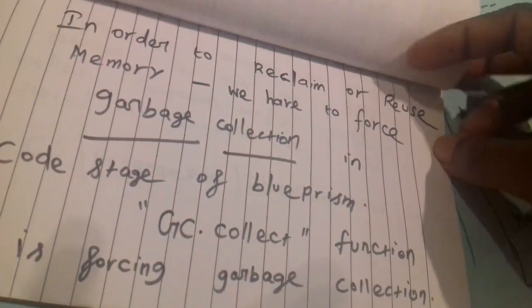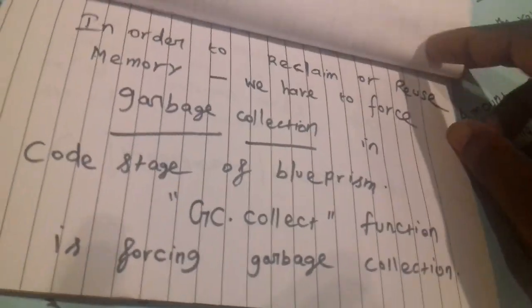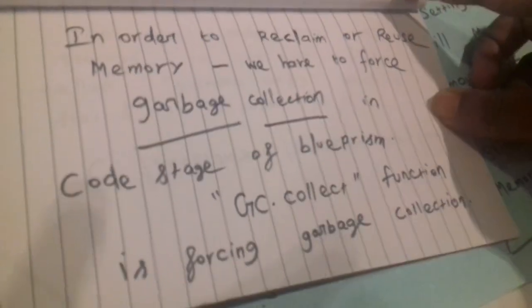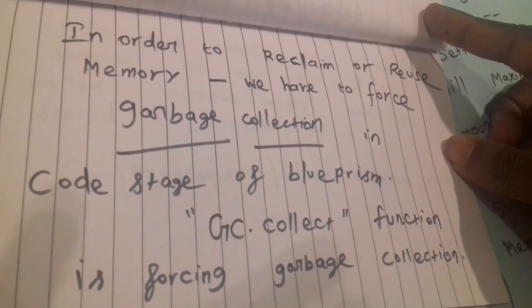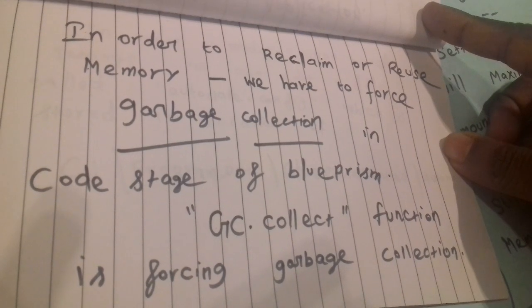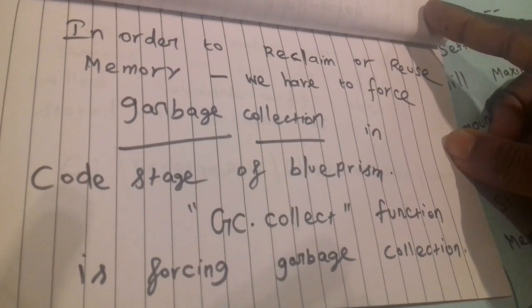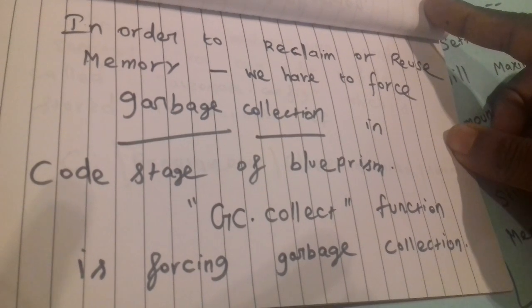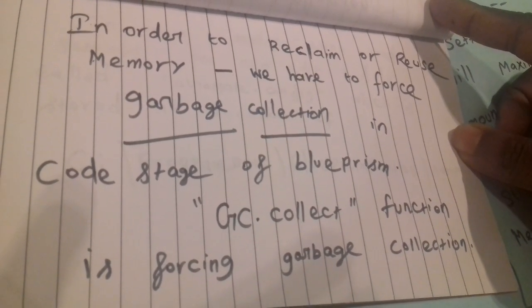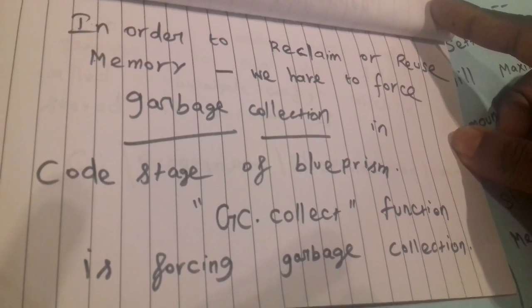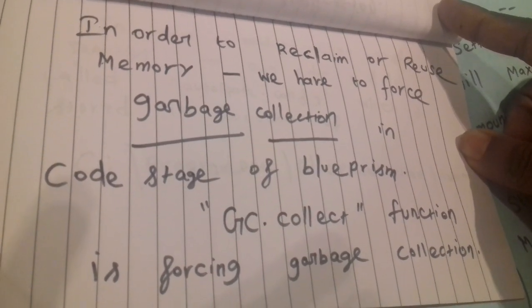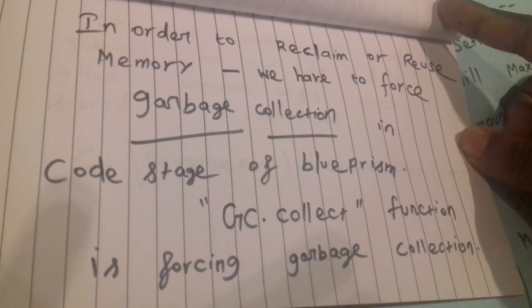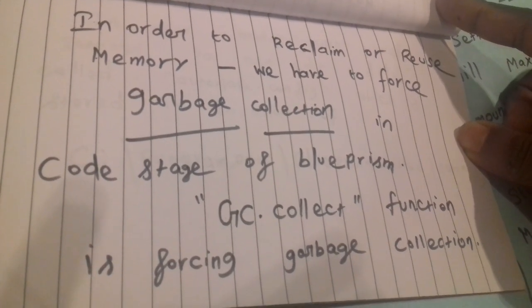In order to reclaim memory, the main problem is sometimes Automate.exe or Blue Prism will be closed because of out-of-memory exceptions or memory consumption. The main problem is unusable or reusable memory is not reclaimed or separately not used.